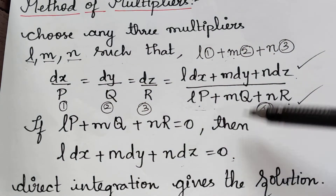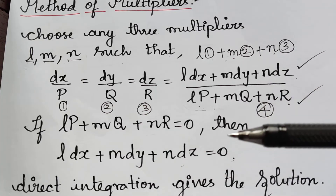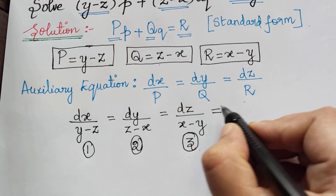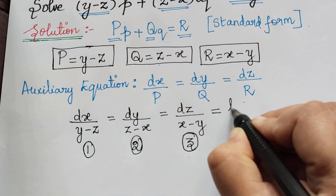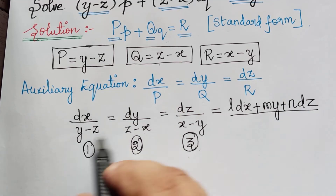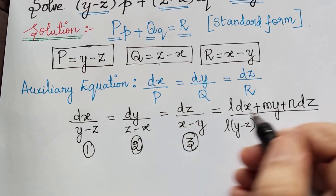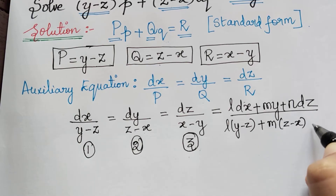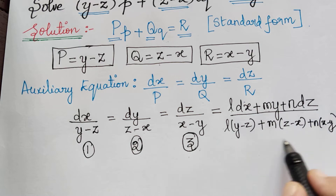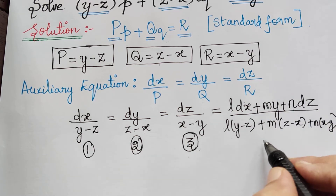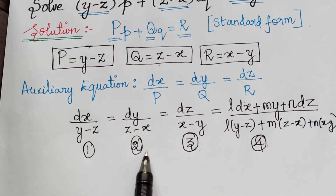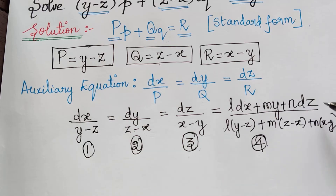Now let us apply this method to the problem. We have the auxiliary equation with labels 1, 2, and 3. We form a new equation 4: L·dx plus M·dy plus N·dz divided by L·(y minus z) plus M·(z minus x) plus N·(x minus y). We must choose L, M, N so the denominator becomes 0. Let us consider the denominator alone to find the first set of multipliers.